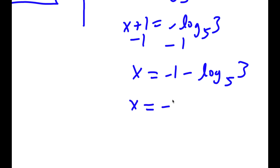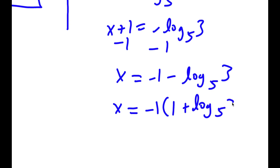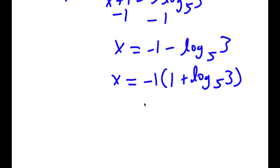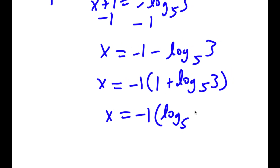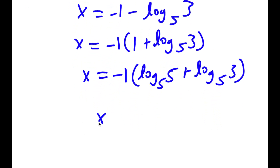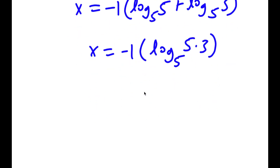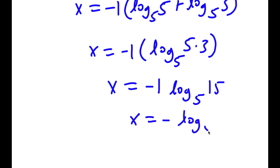Now if I factor out negative 1, I get negative 1 times 1 plus log base 5 of 3. And 1 is the same thing as log base 5 of 5. So I have negative 1 times log base 5 of 5 plus log base 5 of 3. Combining these, I get negative 1 times log base 5 of 15, which is simply negative log base 5 of 15.